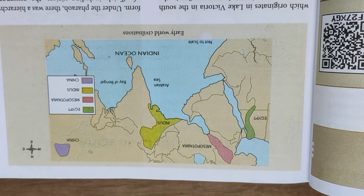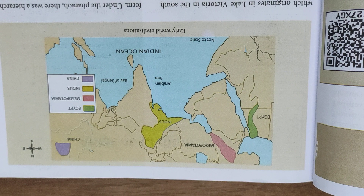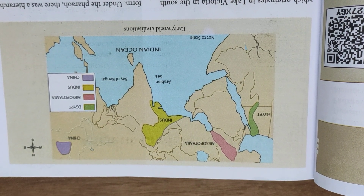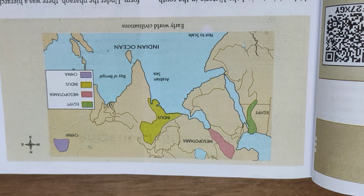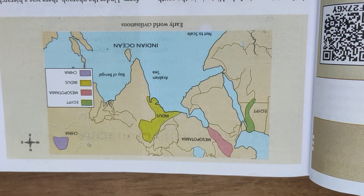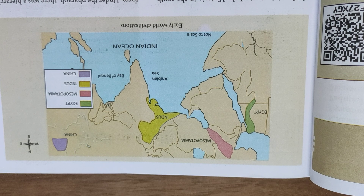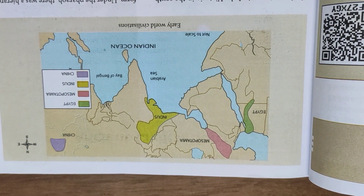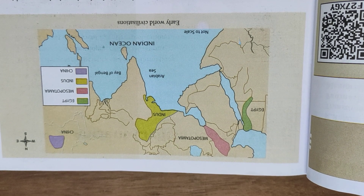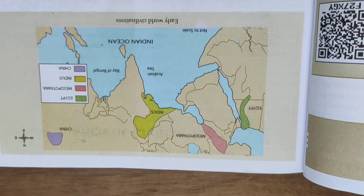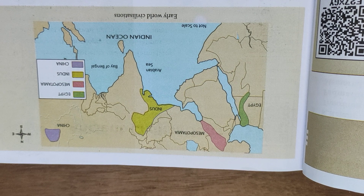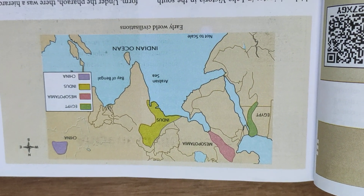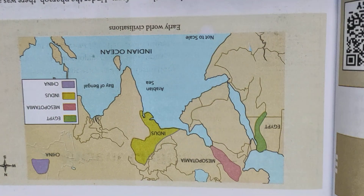In this lesson we are going to identify the civilizations of the world. A number of civilizations are given in this world map. You can see the regions: the first one is Egypt, which is in Africa. The Egyptian civilization, Mesopotamian civilization, Indus Valley civilization, and Chinese civilization are also given here. These are the most important civilizations in the world.